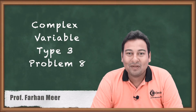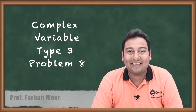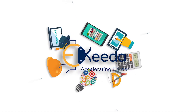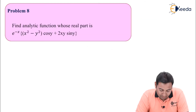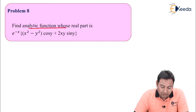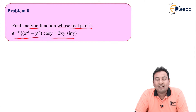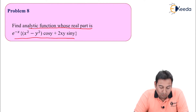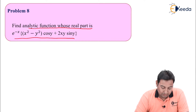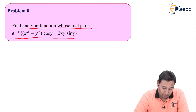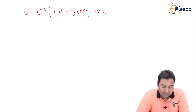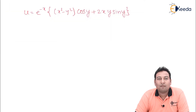Hello friends. In this video we will be discussing complex variable type number 3, problem number 8. Let us have a look at the given problem. Find the analytic function whose real part is given — that means u is given and we need to find the analytic function f of z.